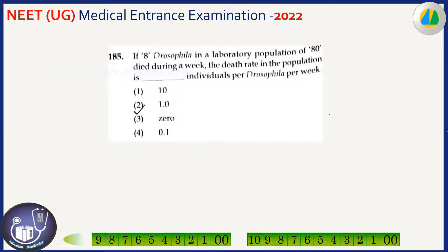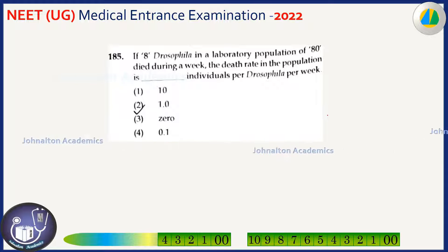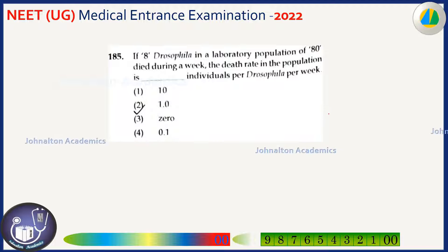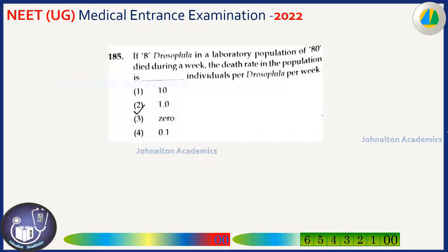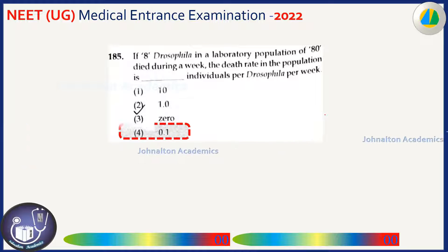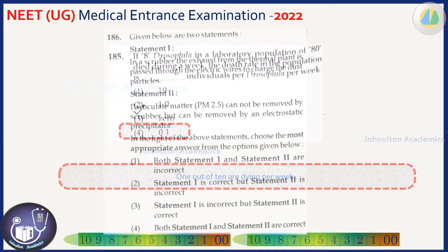If 8 Drosophila in a laboratory population of 80 died during a week, what is the death rate per Drosophila per week? Per 80 it is 8, so per 10 it is 1, meaning the death rate is 0.1 Drosophila per week per Drosophila.